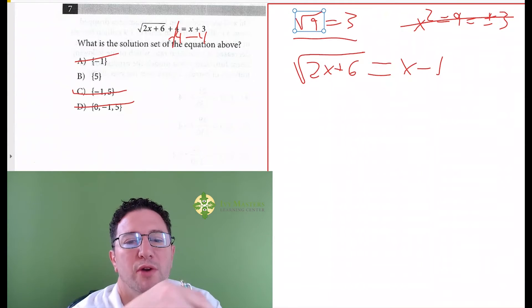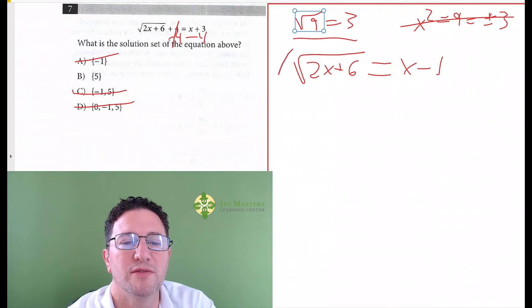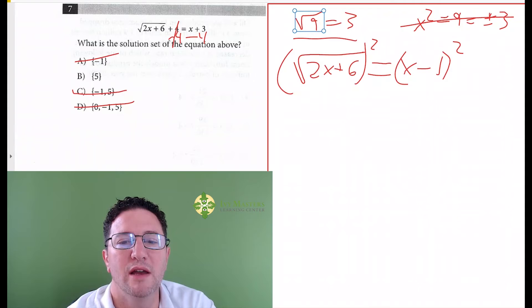So why do I want to do it that way? Because if I were to solve this algebraically, a student who solved this algebraically would go like this: square that side, square that side, this would get rid of the square root, 2x plus 6 you get on the left.